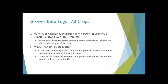The grower data logs were provided on page 10, where you record your yields using those forms. At the end of the year we'll submit that entire packet back to the research team for analysis. At each harvest — particularly for crops with multiple harvests — please record your harvest date and weights. We're recording marketable product from each row in pounds. If some harvest is unmarketable, note the reason and that unmarketable weight in the notes. We prefer you put that into a crate or bucket and record that weight as well — it's really helpful for data analysis.